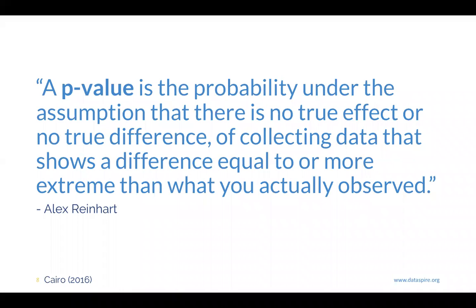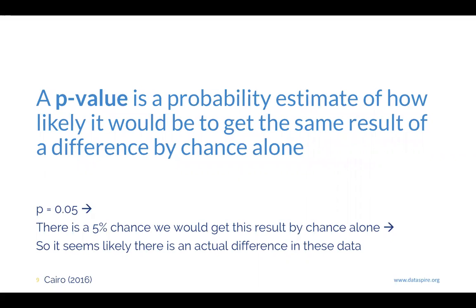This brings us to the p-value, which often gets spit out at us from different tests. Alex Reinhardt says: a p-value is the probability, under the assumption that there is no true effect or no true difference, of collecting data that shows a difference equal to or more extreme than what you actually observed. The p-value is a probability estimate — it's not an exact number. It's based on the probability of how likely it would be for you to get the same result of a difference between two groups totally by chance alone.